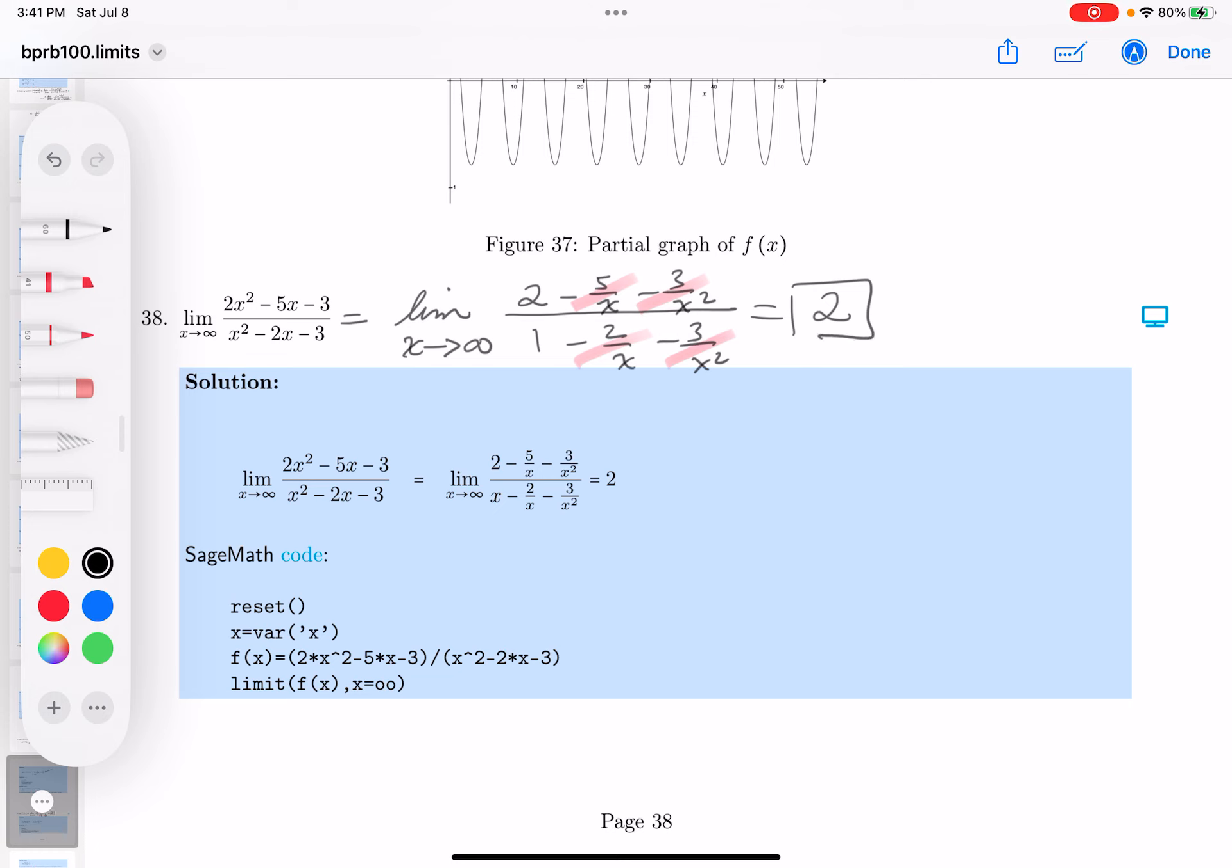And that would be a horizontal asymptote. What's it going to be? y equals 2 would be the horizontal asymptote. Would they ask me for the limit? Let's take a look. We did. Did I do the same thing? I did the same thing, and we're getting the value of 2. Thank you.